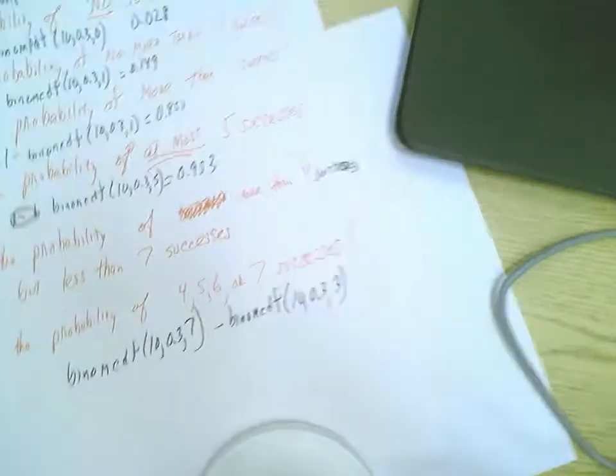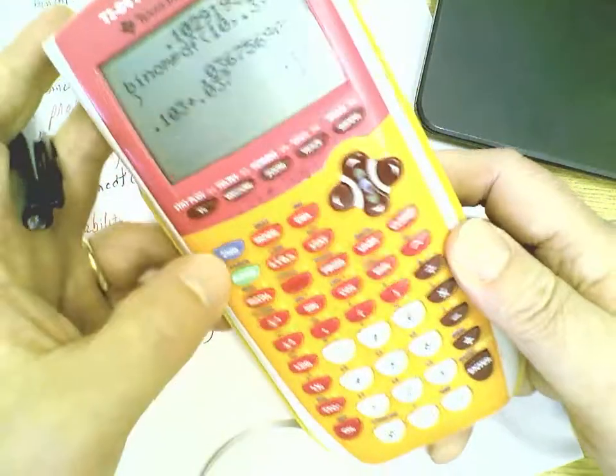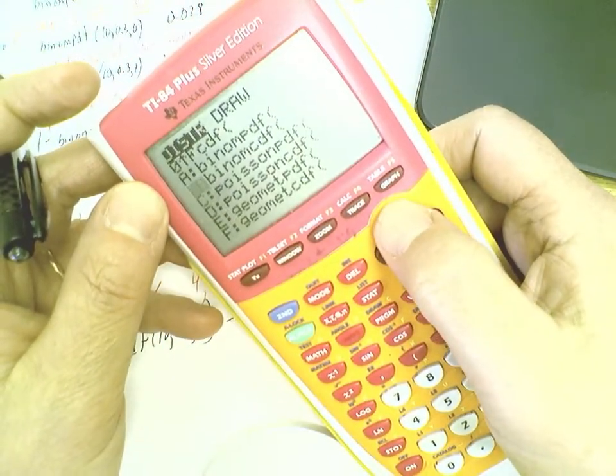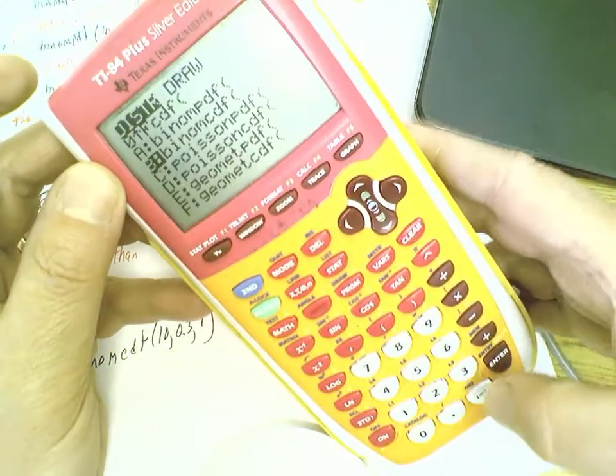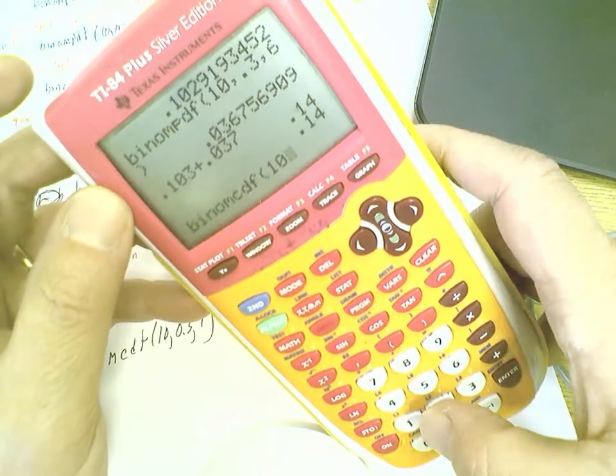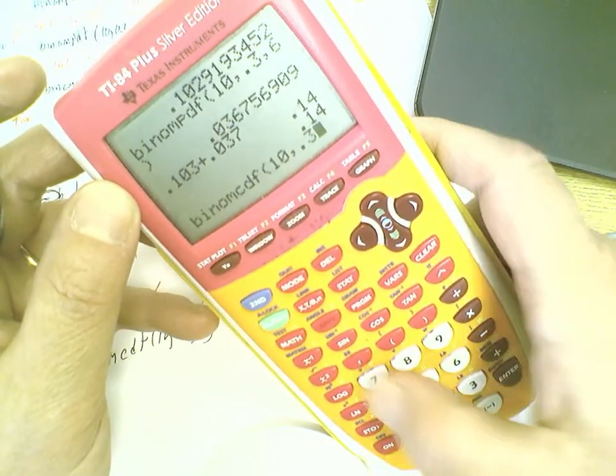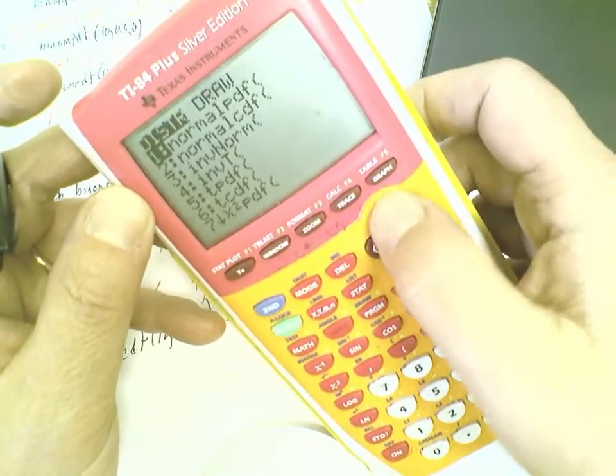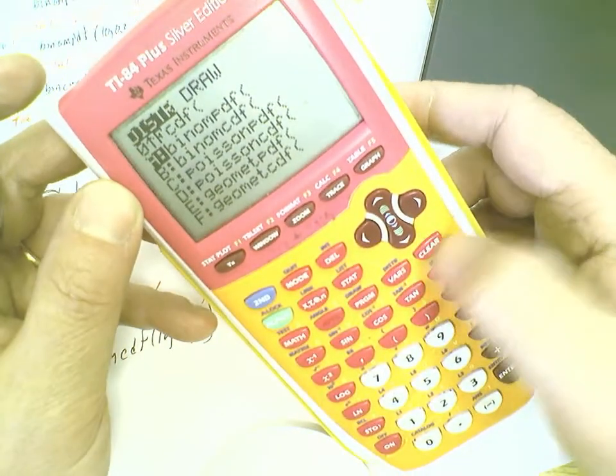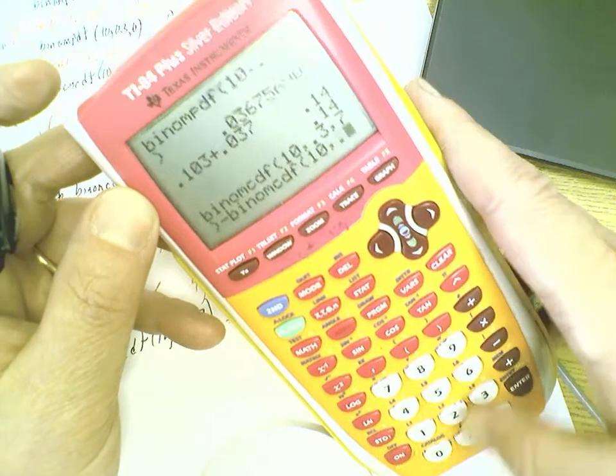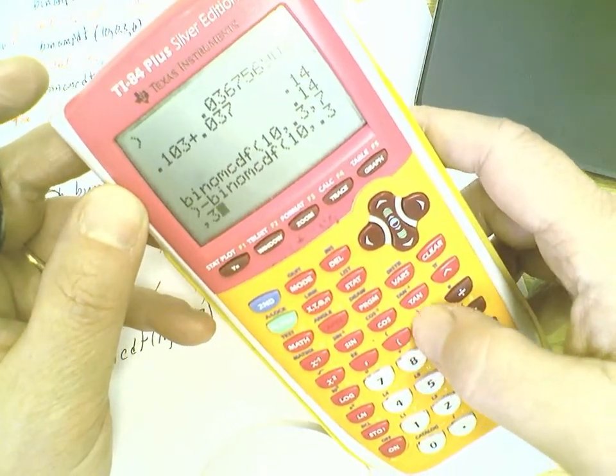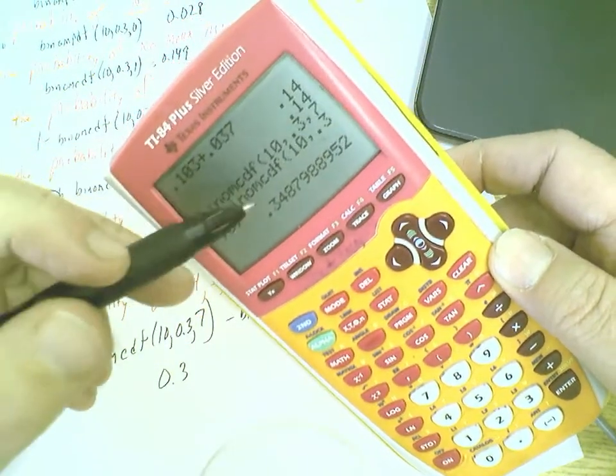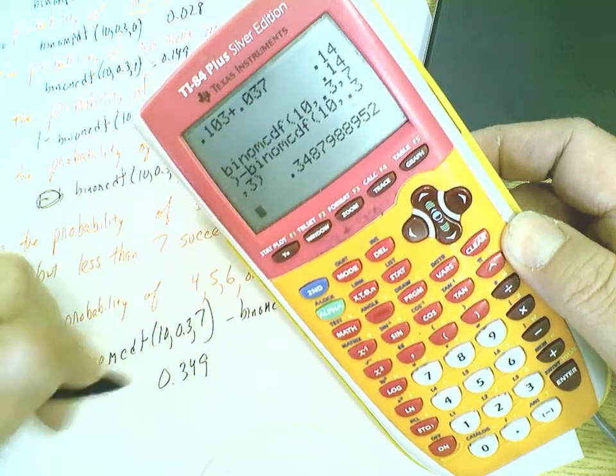So let's go over to the calculator and run both of those pieces through. So here we go, I'll do this one from scratch. Second, distribution, binomial CDF 10, 0.3, comma, 7, minus second, distribution, repeat my binomial CDF 10, 0.3, comma, 3, just like we wrote it. And I'll come up with an answer of 0.349 when I go ahead and round to three significant figures.